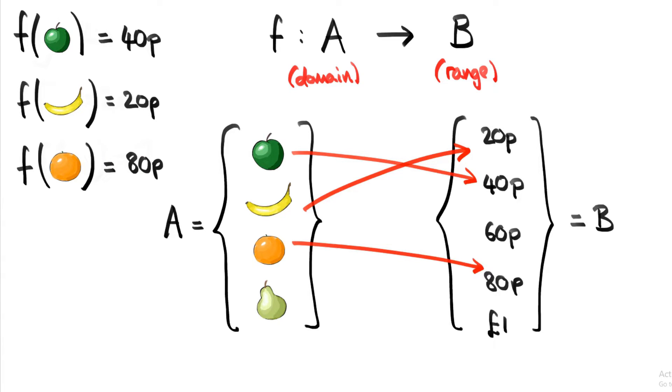Now, are we done defining our function? No, because there's still an element in A that hasn't been assigned a value yet. So if we did f of pear, we wouldn't know what it meant. So the function doesn't know what value to output if we try and put pear in the input.